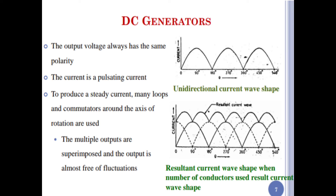In a DC generator, the output voltage always has the same polarity. The current is pulsating. To produce a steady current, many loops and commutators around the axis of rotation are used. The multiple outputs are superimposed and the output is almost free of fluctuation. The resultant current wave shape shows unidirectional current on the Y-axis.